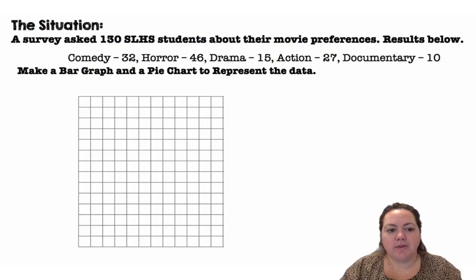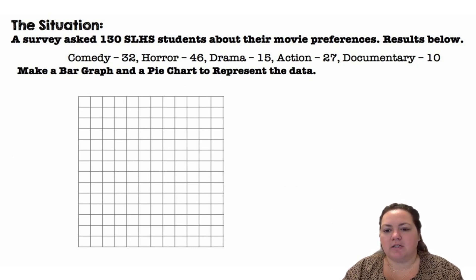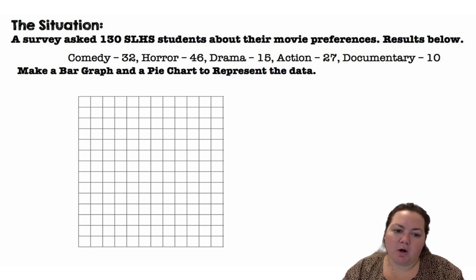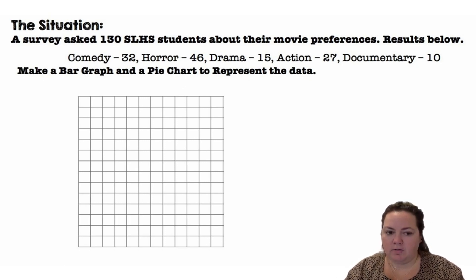So the situation: a survey asked 130 Sunlake High School students about their movie preferences. Results are below. Make a bar graph and a pie chart to represent the data. So we have counts: 32 people chose comedy, 46 people chose horror.